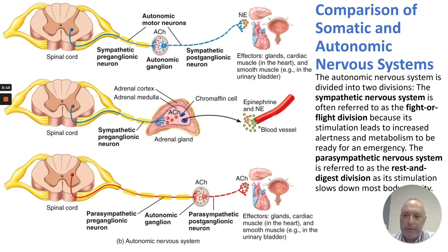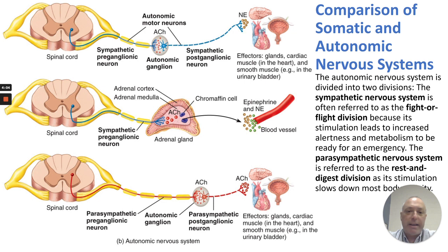We have three different charts here — two for the sympathetic and one for parasympathetic. The autonomic nervous system is divided into the sympathetic division, referred to as fight or flight, because it stimulates alertness and metabolism, ready for flight or fight. The sympathetic motor neurons synapse at the autonomic ganglia, the sympathetic ganglia, then activate a postganglionic neuron which releases norepinephrine on various glands, the heart, or smooth muscle to regulate those effectors for fight or flight.